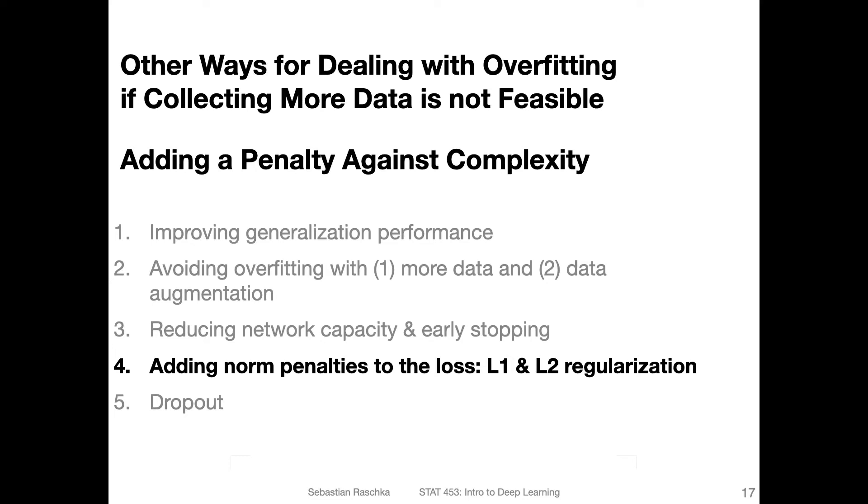In this video, I want to talk about adding a penalty against complexity. We'll be discussing the so-called norm penalties that we can add to the loss function. There are two common versions, the L1 and the L2 norm. You can think of it in the context of a multilayer perceptron.